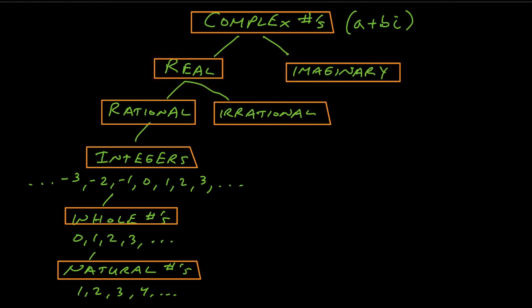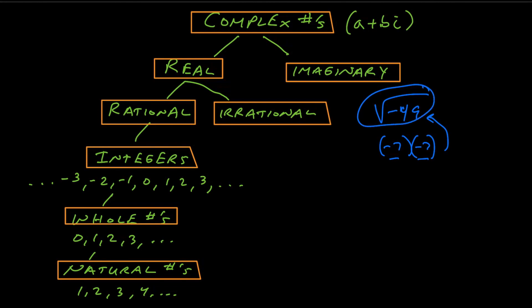If you've never heard of imaginary numbers before, the main thing to remember is that it's whenever you take the square root of a negative number. Say if I had the square root of negative 49 — when you take the square root of a number, it's asking what times itself equals that number. 7 times 7 is positive 49, and negative 7 times negative 7 is also positive 49. So you can't take the square root of a negative number with real numbers — that's where imaginary numbers come into play. For this lesson, just remember: if you're taking the square root of a negative number, it's going to be imaginary. Otherwise, it falls into the real number category.